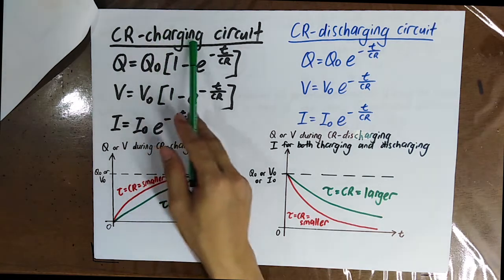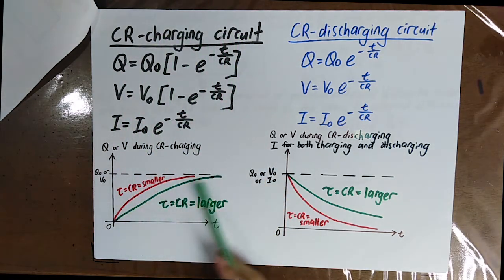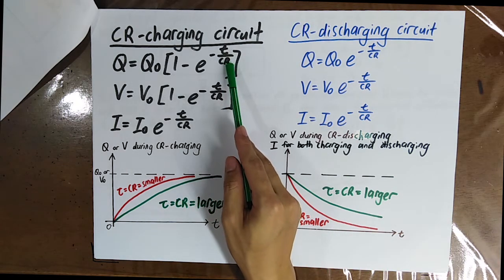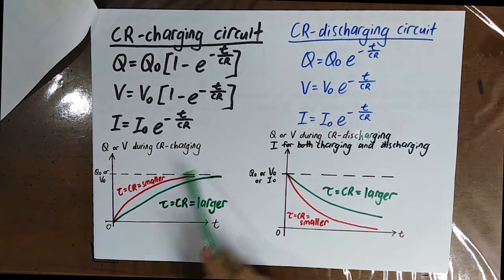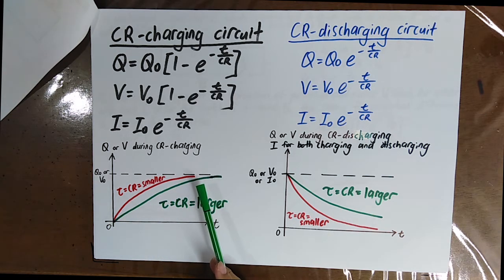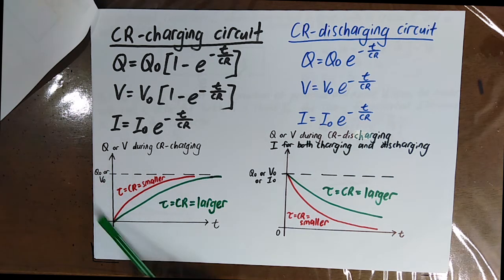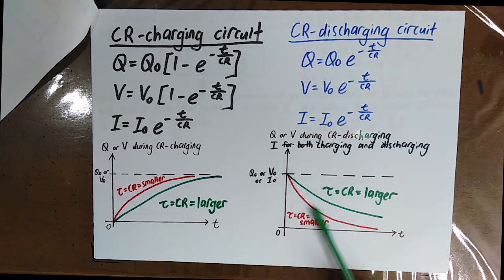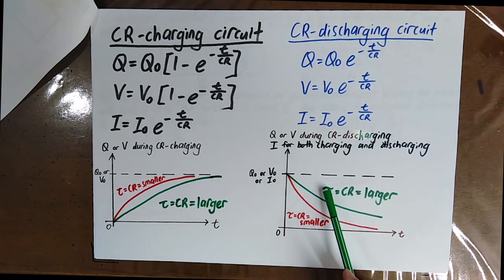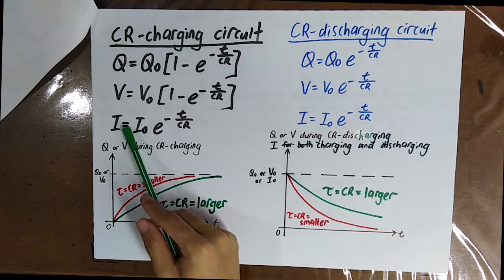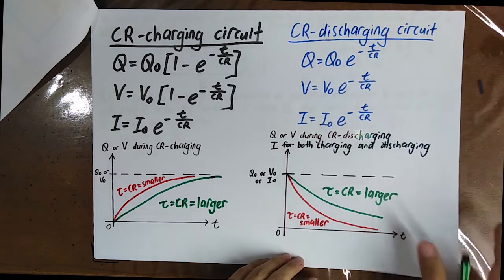In the CR charging circuit, you have three formulas to plot on graphs. When the time constant tau is very large, Q takes a longer time to increase, and V also takes a longer time to increase. For the current I, when the time constant is very large, I takes a longer time to decrease. When tau is very small, I decreases faster.